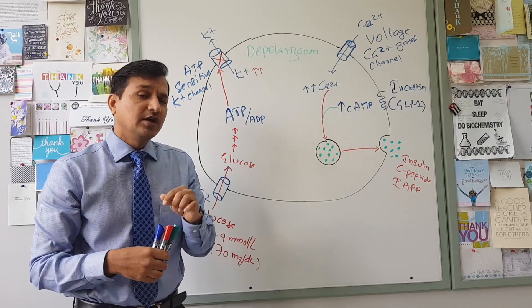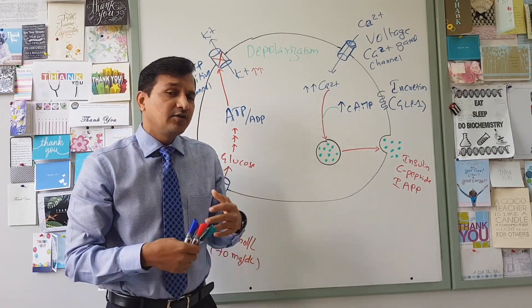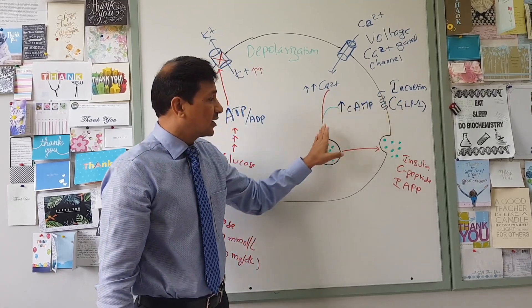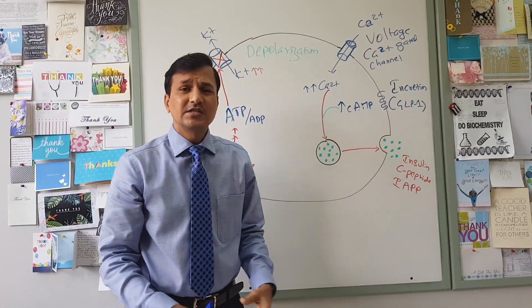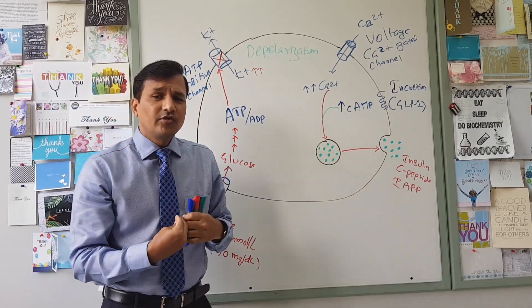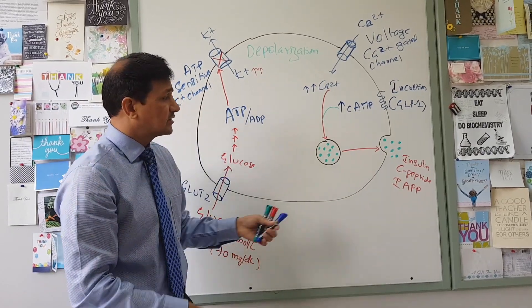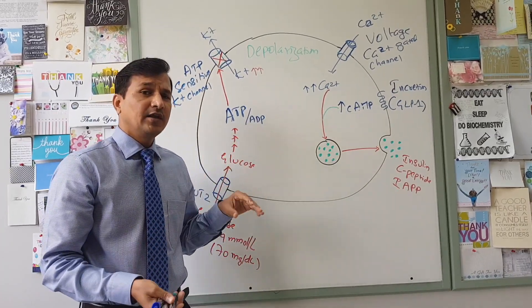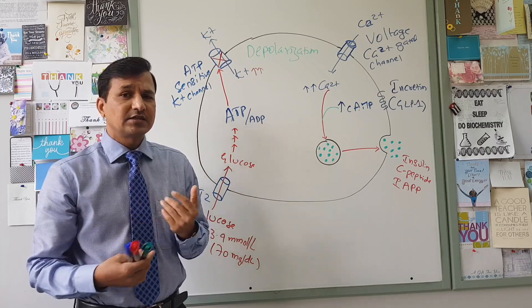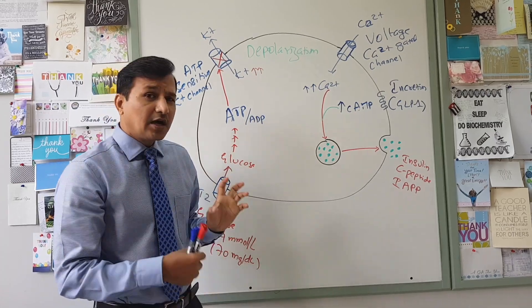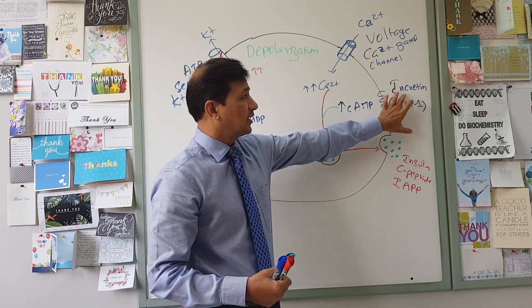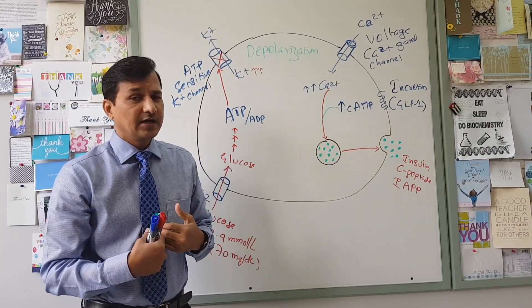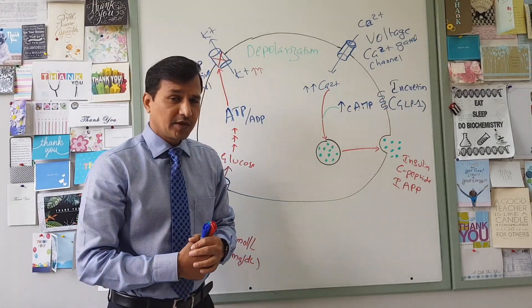When you eat food — not necessarily carbohydrates — there will be release of incretins from the gastrointestinal tract, and these incretins ensure that some insulin is released. Overall, eating food itself stimulates insulin release from beta cells of the pancreas, though the quantity varies between carbohydrates, proteins, and fats.